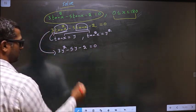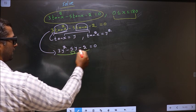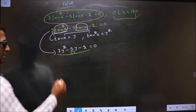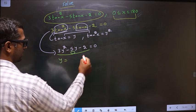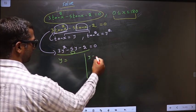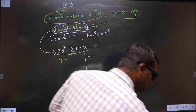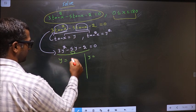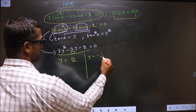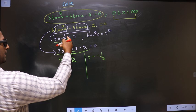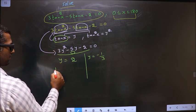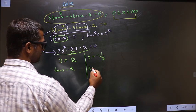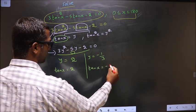Now we got a quadratic. Put this quadratic in the calculator to get the values for y. You get y values to be 2 and minus 1 by 3. Now replace y by tan x. So tan x equal to 2, tan x equal to minus 1 by 3.